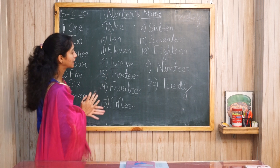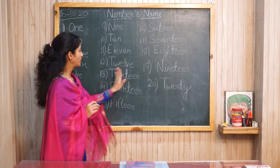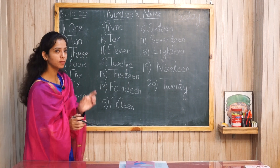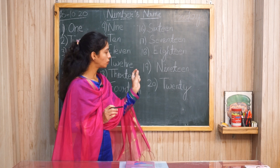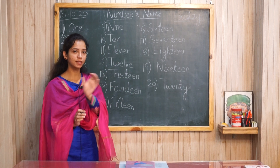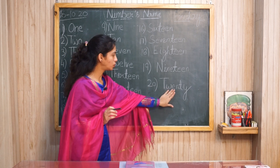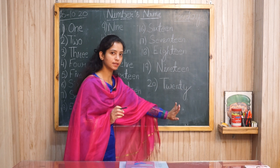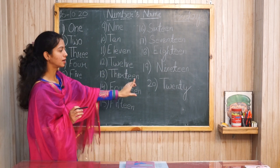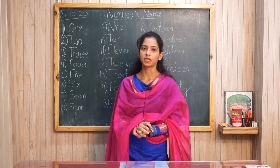Today we covered number names from 1 to 20. The key learning is: whenever you learn number names, break them into parts — take two letters at a time rather than single letters. For example, twenty is T-W-E-N-T-Y — memorize it this way. Learn all spellings from 1 to 20 using this method. That's all for today's session.